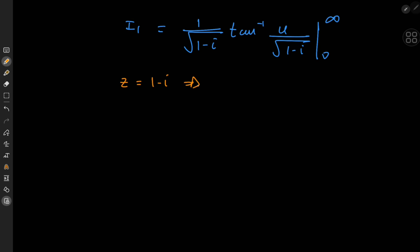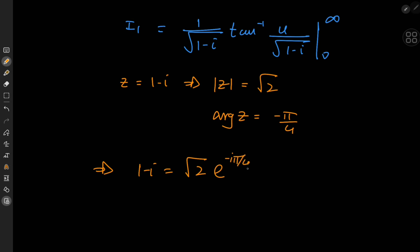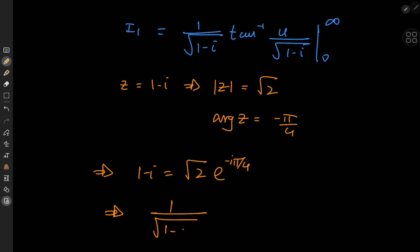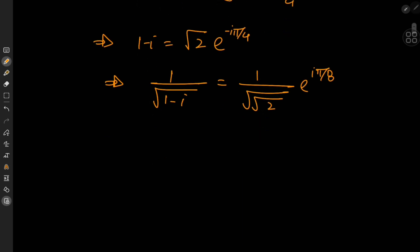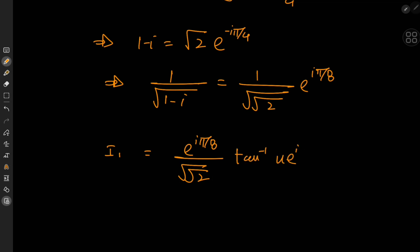Let z equal 1 minus i. The absolute value of z is √2, and the principal argument of z is negative π/4. So 1 minus i equals √2 · e^(−iπ/4). This further implies that 1/√(1 minus i) equals e^(iπ/8) divided by ⁴√2. So our integral I₁ is now e^(iπ/8) over ⁴√2 times the inverse tangent of u·e^(iπ/8)/⁴√2, evaluated as u tends from 0 to infinity.